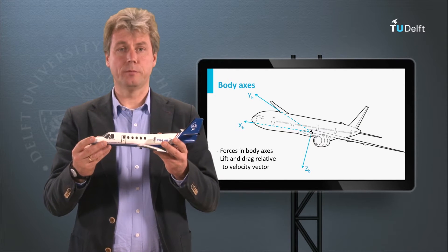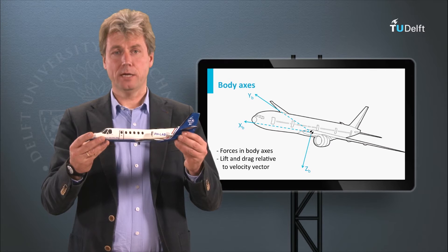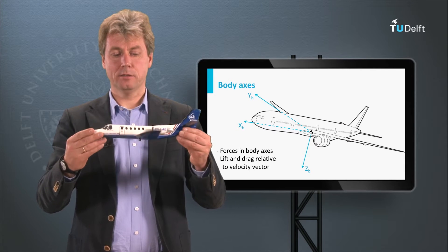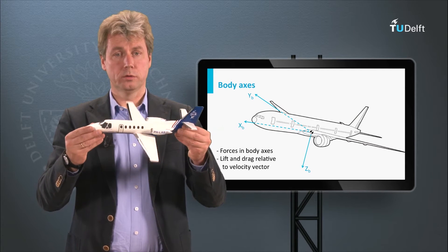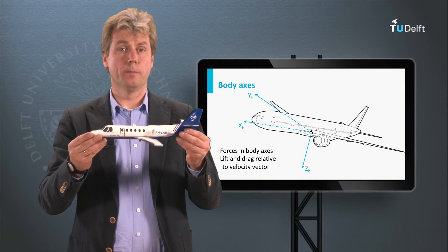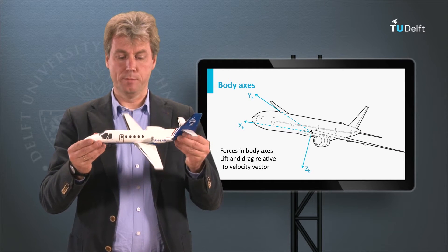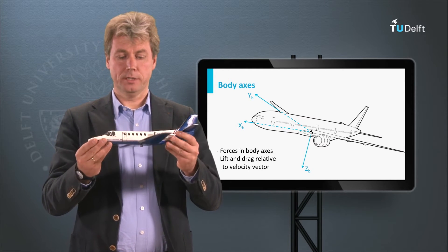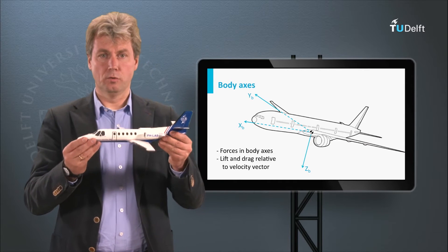We also use this axis to describe the rotations, and the rotations around the X axis we call roll, so that is the roll angle, or bank as it is also called, to bank the aircraft. So that is the rotation around the X axis, roll or bank.